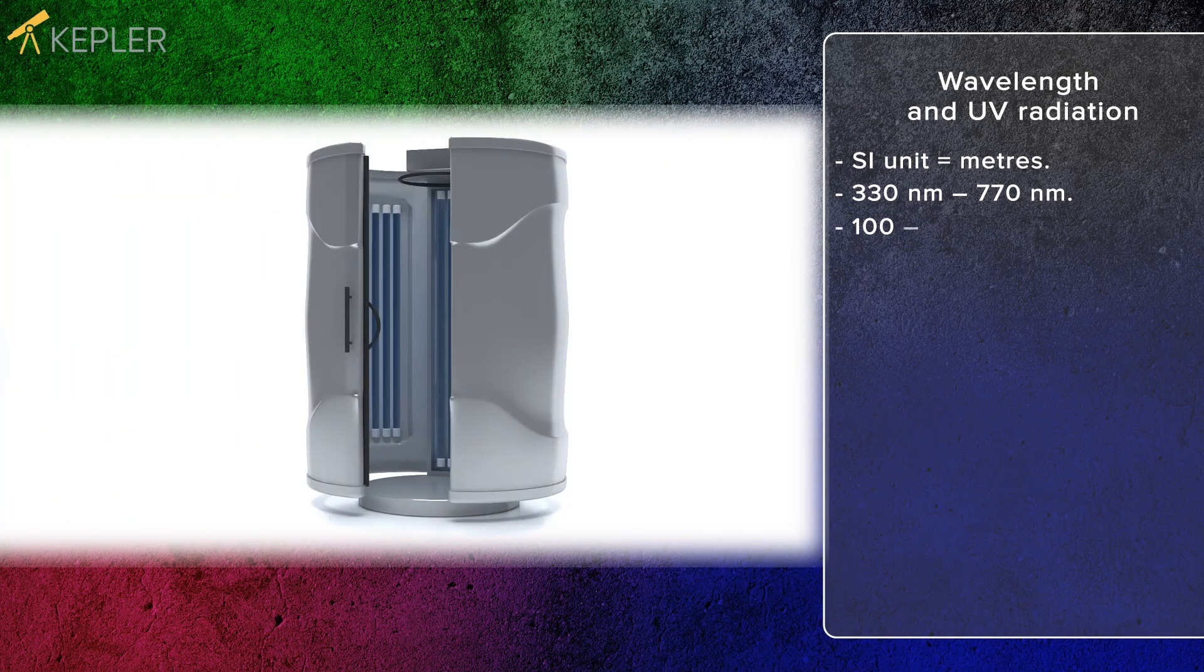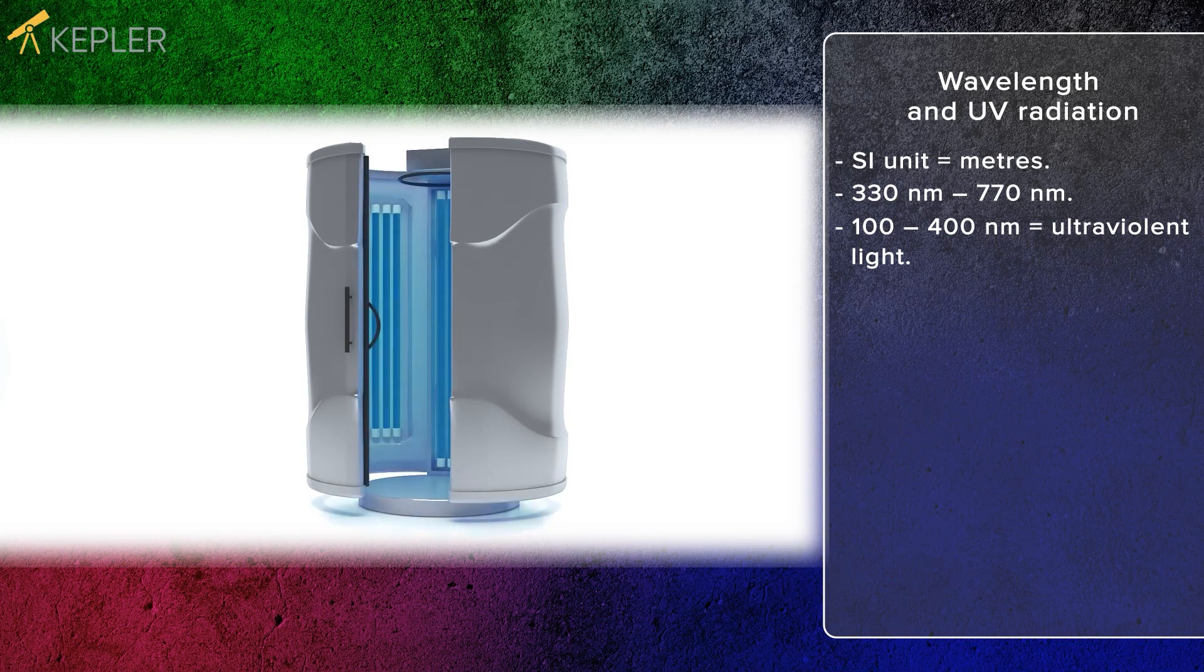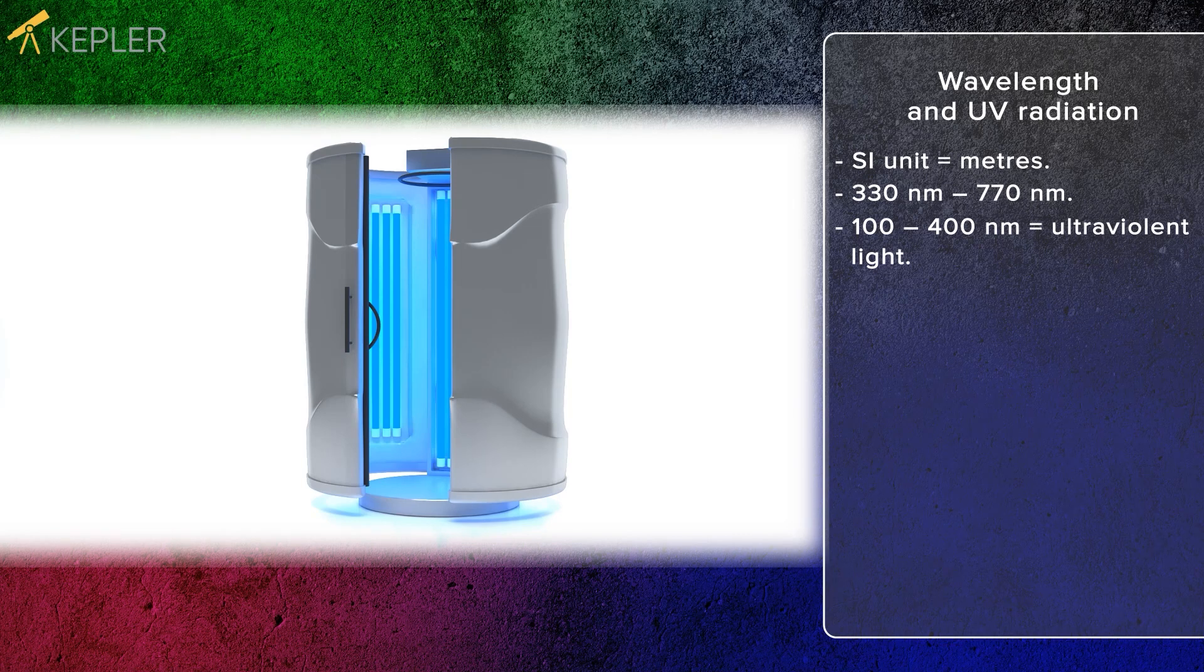Electromagnetic waves between 100 and 400 nanometers are called ultraviolet light and border on violet color. This light is invisible to the eye.